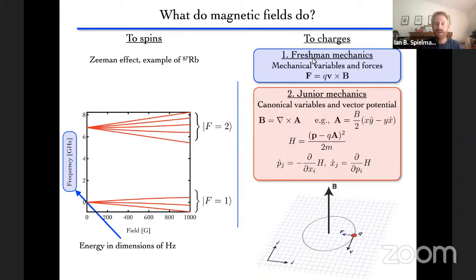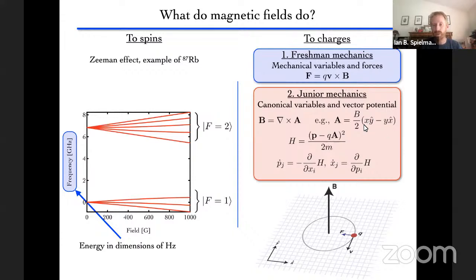We want to describe magnetic fields using a vector potential A, where the curl of A gives the magnetic field B. The most common representation of a uniform field along Z uses the symmetric gauge; we'll use the Landau gauge, which sticks all spatial dependence on one variable. The Hamiltonian is then written with A inside the kinetic energy. In classical mechanics you'd have Hamilton's equations giving cyclotron orbits; in quantum mechanics we treat it similarly. The aim is to have the Lorentz force physics, not just the Zeeman effect.